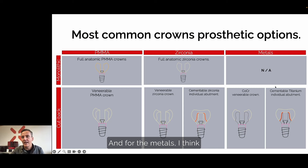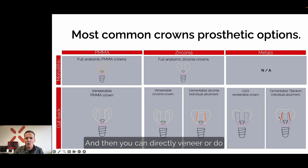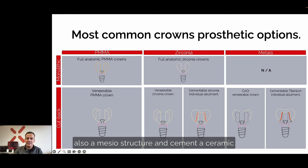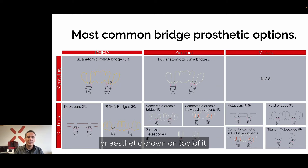For the metals, it is mostly used for a framework, and then you can directly veneer it or do a mesostructure and cement a ceramic or aesthetic crown on top of it.